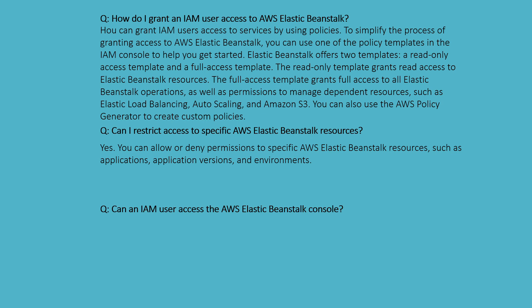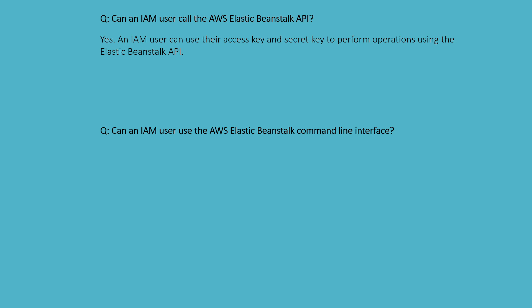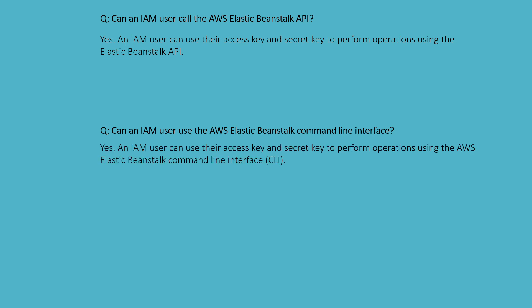Can IAM users access the Elastic Beanstalk console? Yes, an IAM user can access the AWS Elastic Beanstalk console using their username and password. Can IAM users call the AWS Elastic Beanstalk API? Yes, an IAM user can use access keys to perform operations using the Elastic Beanstalk API. Can IAM users use the Elastic Beanstalk command line interface? Yes, an IAM user can use their access key and secret key to perform operations using the Elastic Beanstalk CLI.